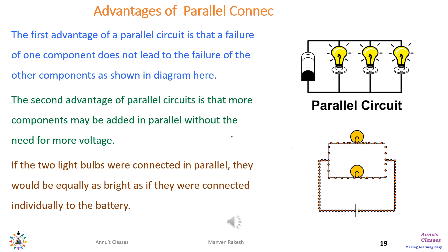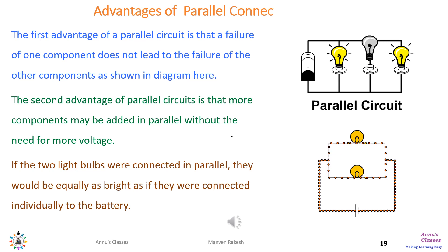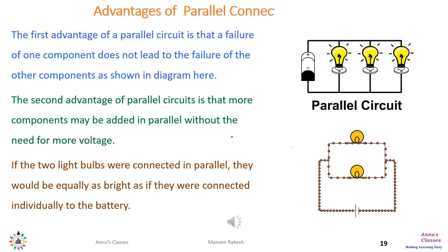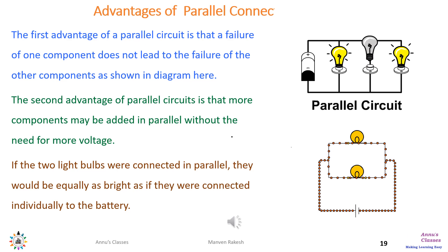The parallel connection has a major advantage: if one component gets fused, the other components can still work perfectly. A second advantage is that when two bulbs are connected in parallel, they glow with the same intensity.